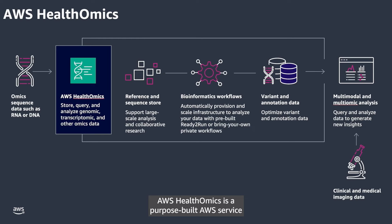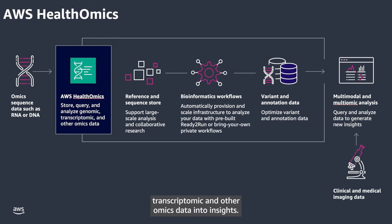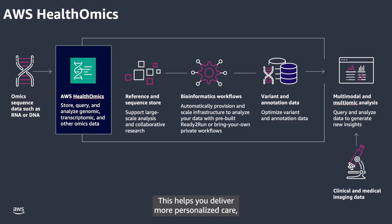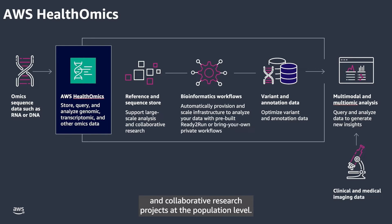AWS Health Omics is a purpose-built AWS service that helps health organizations transform genomic, transcriptomic, and other omics data into insights. With AWS Health Omics, you can securely prepare and ingest omics data to combine it with other data modalities. This helps you deliver more personalized care, as well as securely scale to support large-scale analysis and collaborative research projects at the population level.